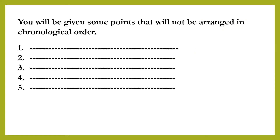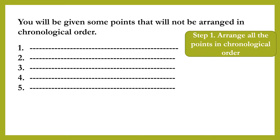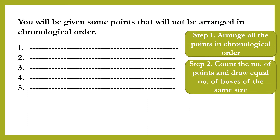You will be given some points that will not be arranged in chronological order. So the first step that you will have to follow is to arrange all the points in chronological order. This first step can be done mentally or on a rough paper. Then the second step is to count the number of points given and draw an equal number of boxes of the same size.